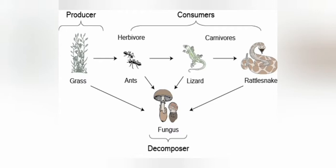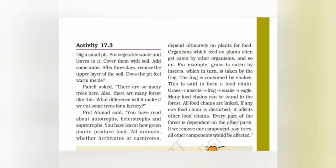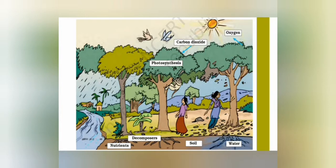Every part of the forest is dependent on the other parts — all are interdependent. If we remove one component, say trees, all other components would be affected. Trees are the main component of the forest. If trees are removed, the rest of the things get disturbed and ultimately they will be destroyed.